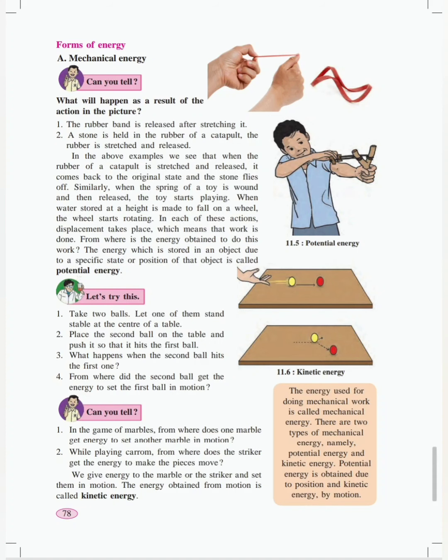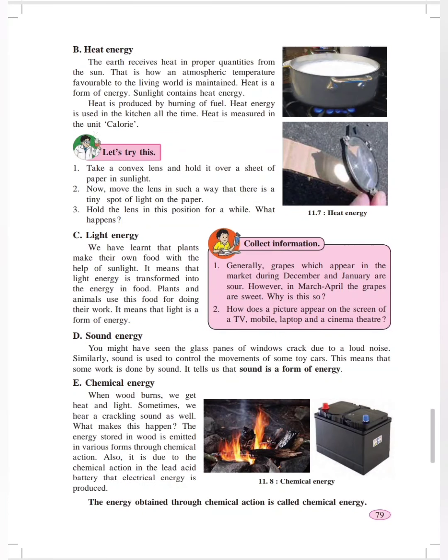Second one is heat energy. The earth receives heat in proper quantities from the sun. That is how an atmospheric temperature favorable to the living world is maintained. Heat is a form of energy. Sunlight contains heat energy. Heat is produced by burning of fuel. Heat energy is used in the kitchen all the time. Heat is measured in the unit calories.